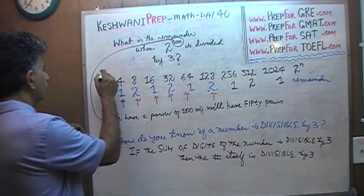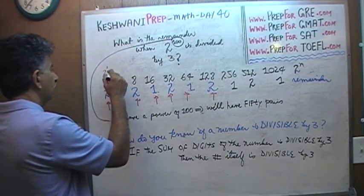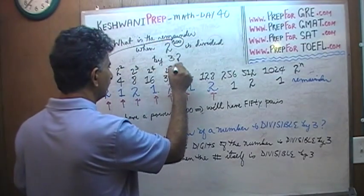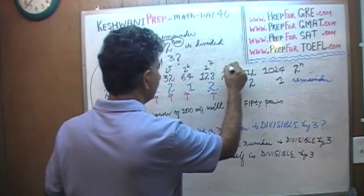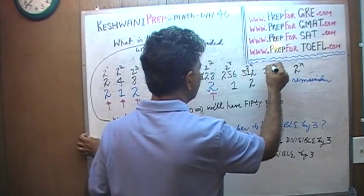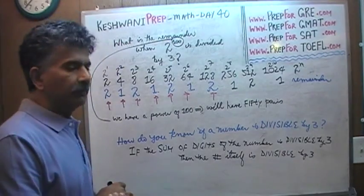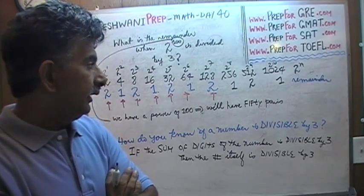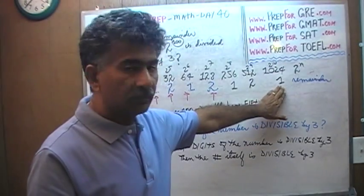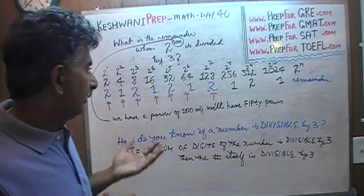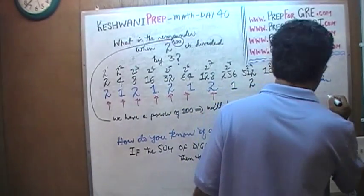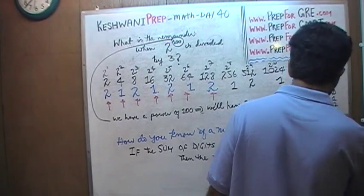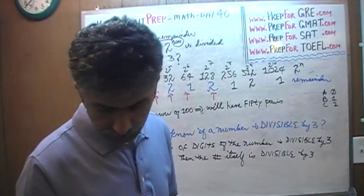What does that tell you? If we have 50 exact pairs — for example if you had only 2 exact pairs, the remainder would be 1; if you had 5 exact pairs, the remainder would be 1 — since we have 50 exact pairs, the last remainder in the sequence at 2 raised to 100 follows the pattern 2, 1, 2, 1, and the remainder is 1. The answer is 1. We had 3 answer choices left: 0, 1, and 2 — therefore the answer is B.